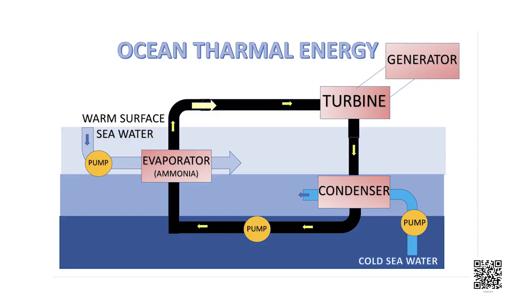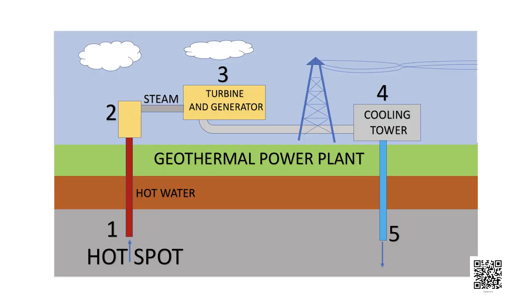The vapors of the liquid are then used to run the turbine of the generator. The cold water from the depth of the ocean is pumped up to condense the vapor back into liquid. This process is repeated and electricity is generated using the temperature difference between the surface and depths of the ocean.